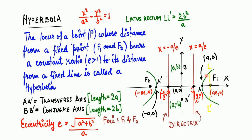This eccentricity will always be greater than 1. Moreover, this ratio will always remain constant. If you take any point anywhere on the curve and measure the distance to the directrix and the distance to the focus, the ratio will remain the same, and that ratio is called the eccentricity.